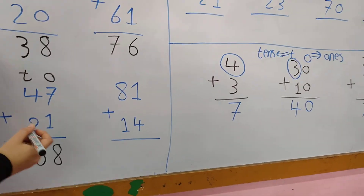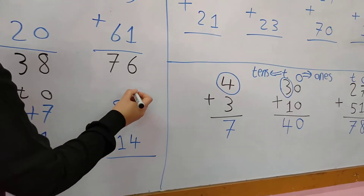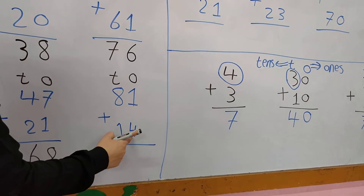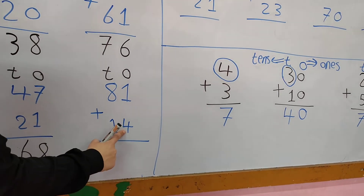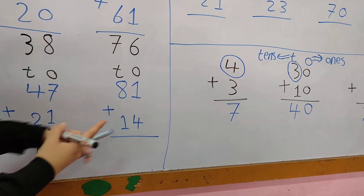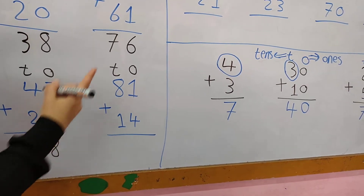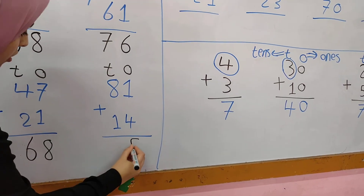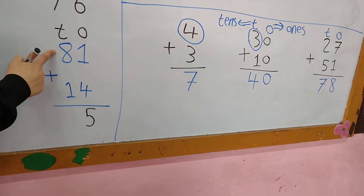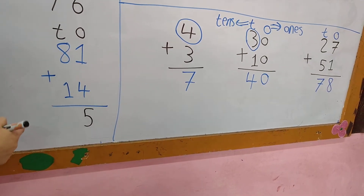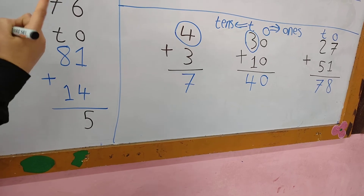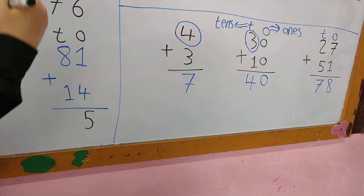81 plus 14. The first thing: write O and T. In the 1's column: 1 plus 4. I put 4 in my mind and 1 on my fingers and count after 4. After 4: 5. In the 10's column: 8 plus 1. I put 8 in my mind and 1 on my fingers and count after 8. After 8: 9. So the answer is 95.